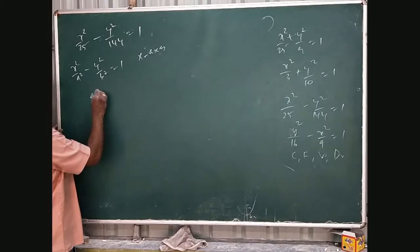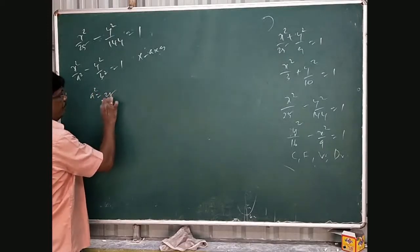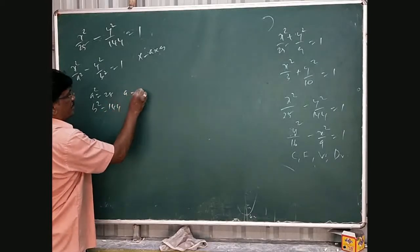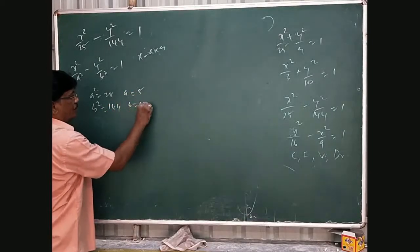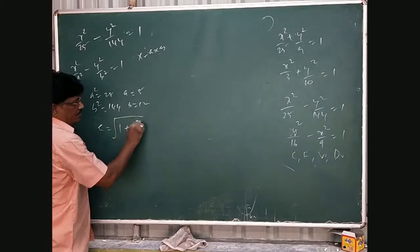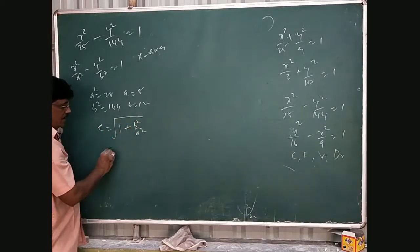So, a squared equals 25, b squared equals 144, that means a equal to 5, b equal to 12. E equal root of 1 plus b squared by a squared, that is 1 minus here 1 plus.